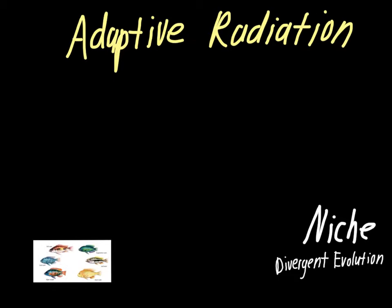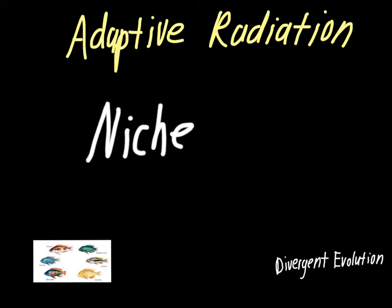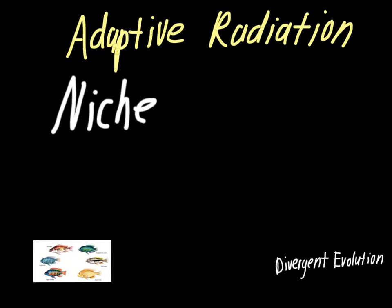The first thing to talk about is adaptive radiation. To understand this, you need to consider the term 'niche' from last year's environmental science. A niche is simply the role of an organism in its environment. This is important because our definition of adaptive radiation involves the term niche — it's when one species gives rise to many species due to the creation of new habitats and niches.